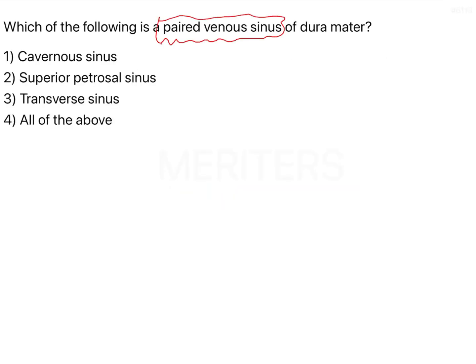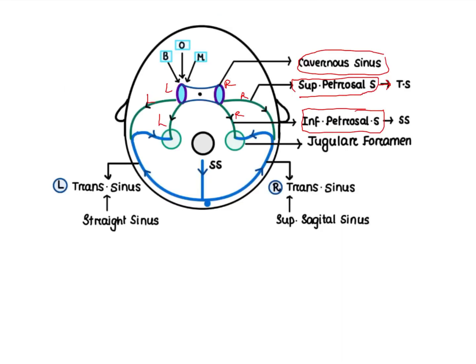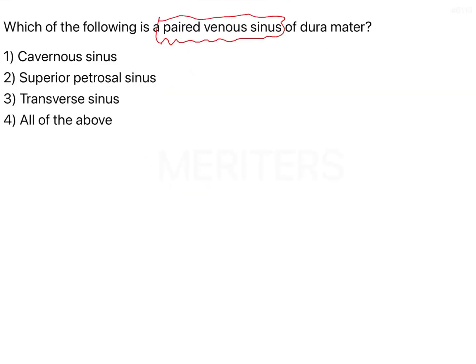Going back to the question: cavernous sinus, superior petrosal sinus, and the third option, transverse sinus. Here you can see this is the transverse sinus — this is the right part and this is the left part of the transverse sinus. So all the options asked — cavernous sinus, superior petrosal sinus, and transverse sinus — are all paired. That's why the correct answer is all of the above.